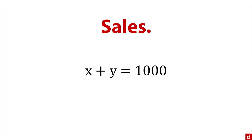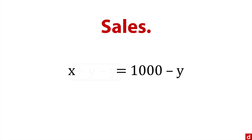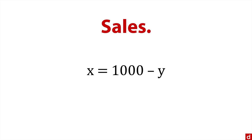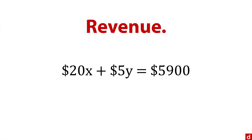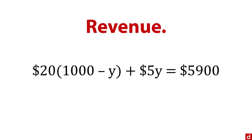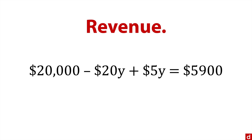Let's start with sales. I'm going to try to isolate the values by putting in minus y on both sides, then subtracting it, so I'm left with x equals 1,000 minus y. I solved for x — you'll see why in just a second. Then we go to revenue. We know our sales of these two price points add up to $5,900 total. We take this x and replace it with the equation we just got, which is 1,000 minus y. Then we multiply that through and get 20,000 minus 20y plus 5y equals 5,900.